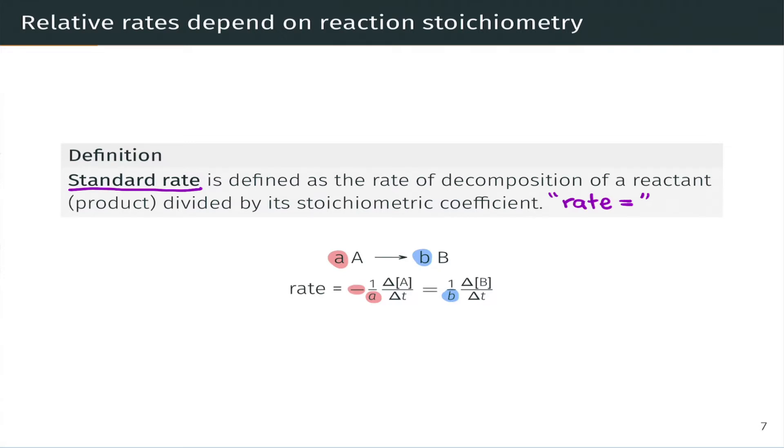And both of these are numerically equal to a common value. And what is this value? This is the key to understanding standard rate conceptually. What is this number that pops out of this mathematical expression, 1 over b delta b delta t?